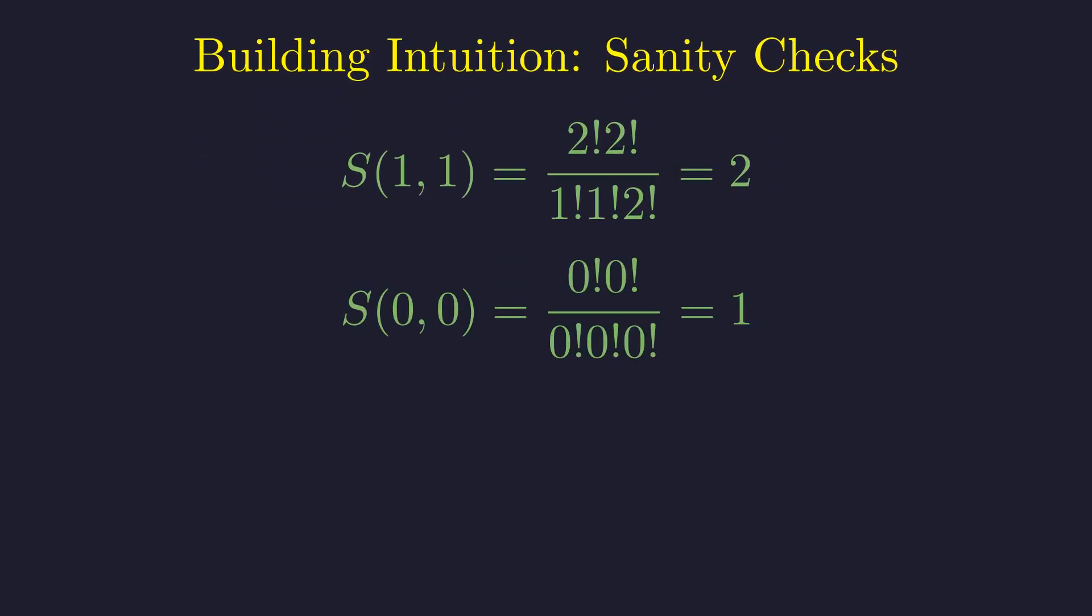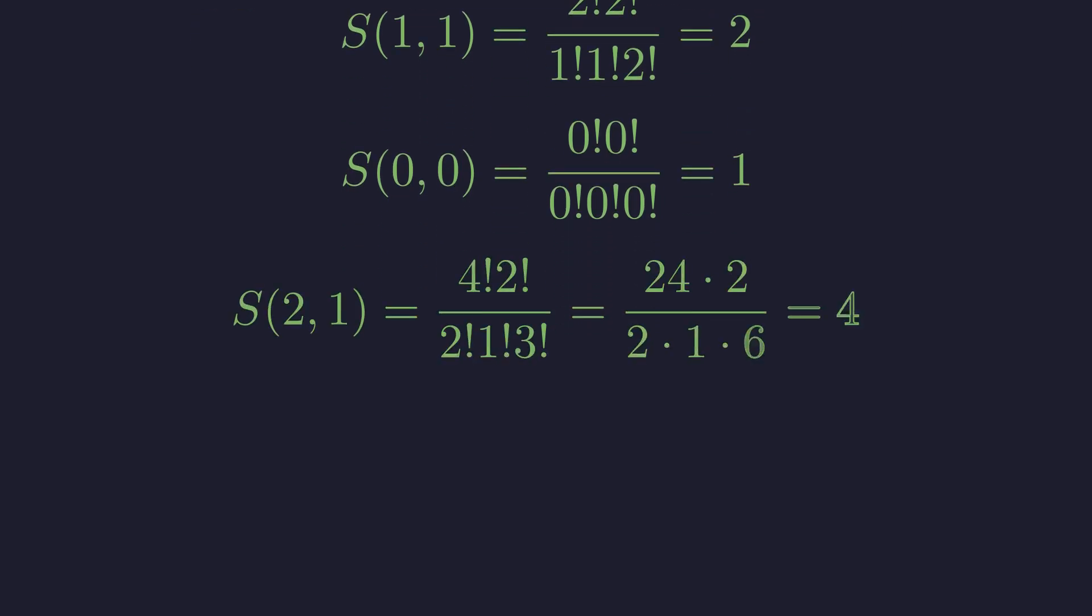And just to check the edge case, when both m and n are 0, we get 1. Also an integer. Now let's try something asymmetric. When m is 2 and n is 1, we get 4.